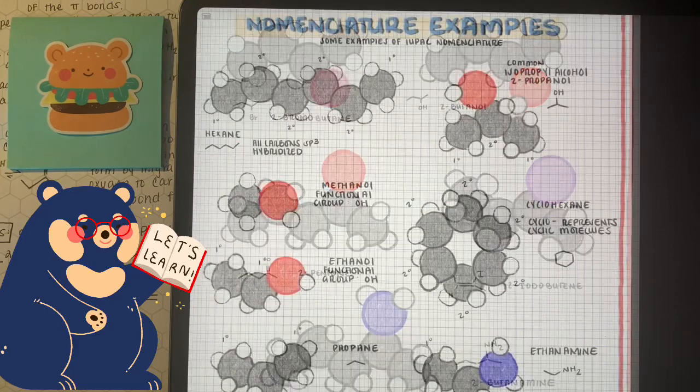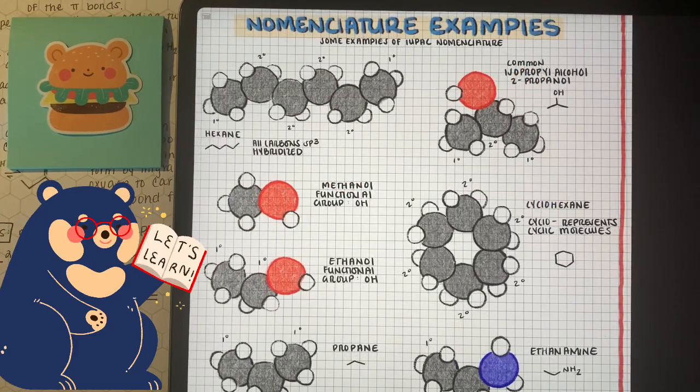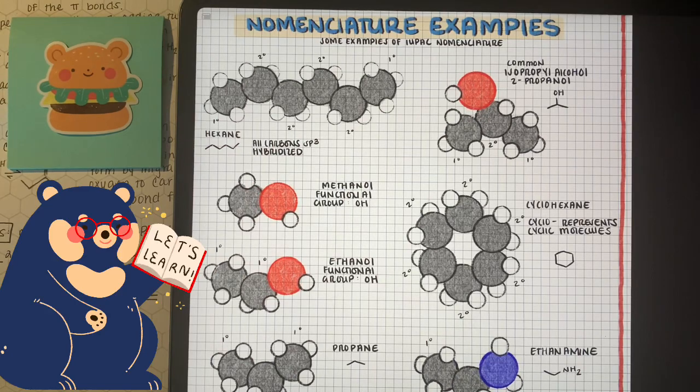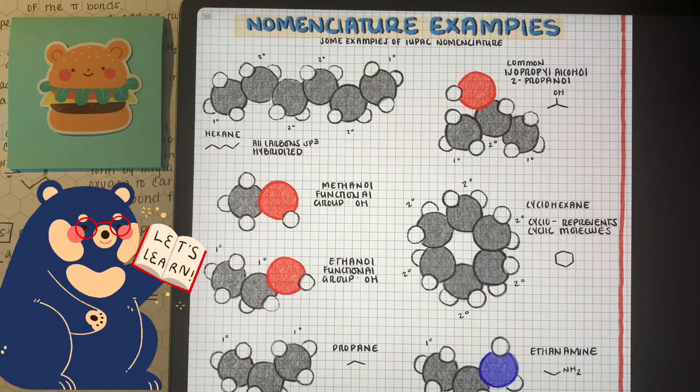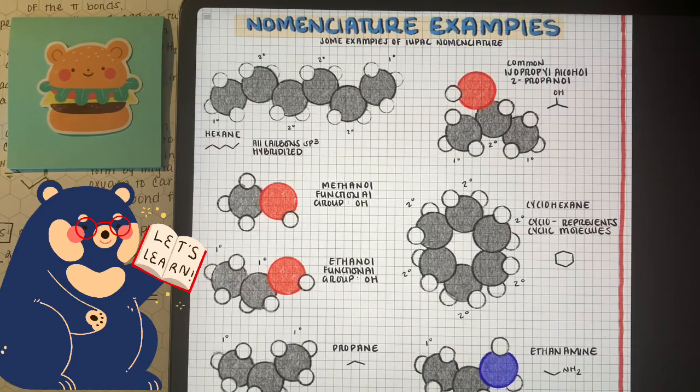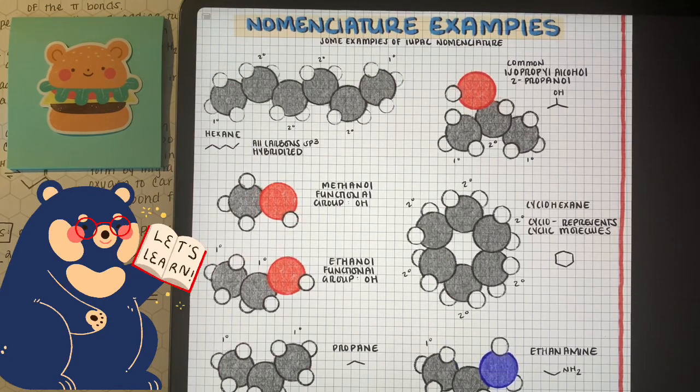There are also nomenclature rules to help us know whether or not we have a cyclic structure. So here, we have an example of cyclohexane. That cyclo, as a prefix, helps us know that we have a cyclic structure, versus having hexane in the top left, which is just a linear hydrocarbon chain.